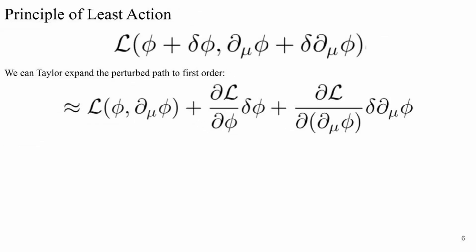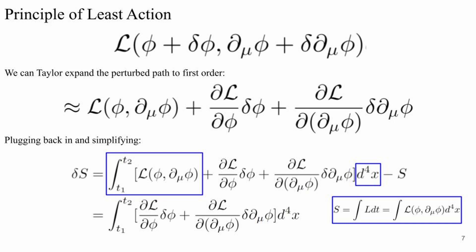From here, we can start algebraically manipulating our expression. We can Taylor expand the perturbed action to first order in all of its arguments. After performing the Taylor expansion and plugging back in, we notice that the zeroth order term is just the nominal action, so it cancels out with the minus S that we already had.